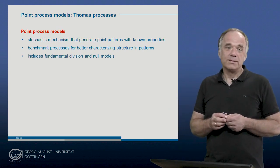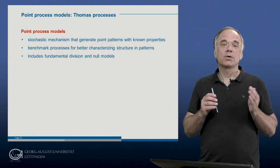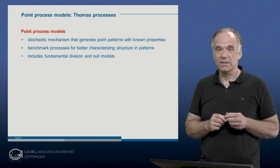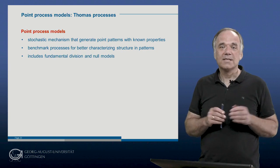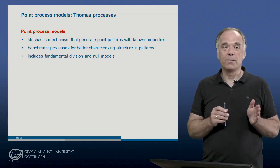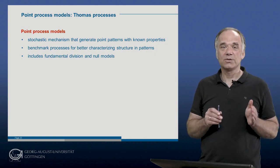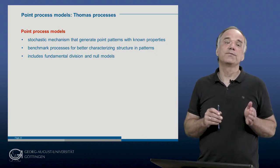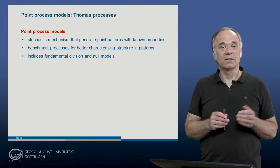What is a point process model? It is a stochastic mechanism that generates point patterns with known properties. These patterns can be used as benchmarks for better characterizing spatial structure in point patterns. Point process models also include the fundamental divisions and null models.